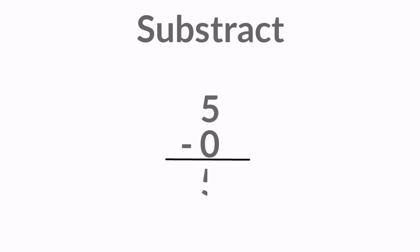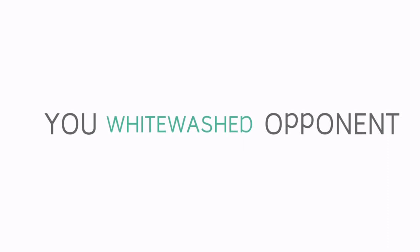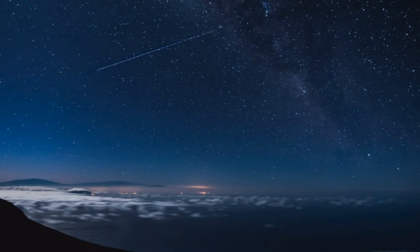Extreme whitewash: in this type, you have to get more marks in all five subjects. Since there are only five subjects and your opponent has got more marks than you in no subject, your whitewashing score is five — or you can say you extremely whitewashed your opponent.